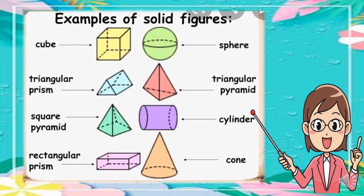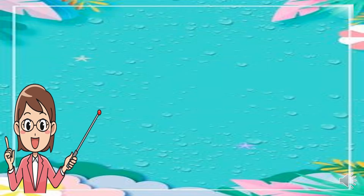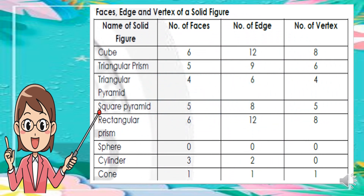Here are the examples of solid figures: cube, triangular prism, square pyramid, rectangular prism, sphere, triangular pyramid, cylinder, and cone. Here are the faces, edges, and vertices of a solid figure.